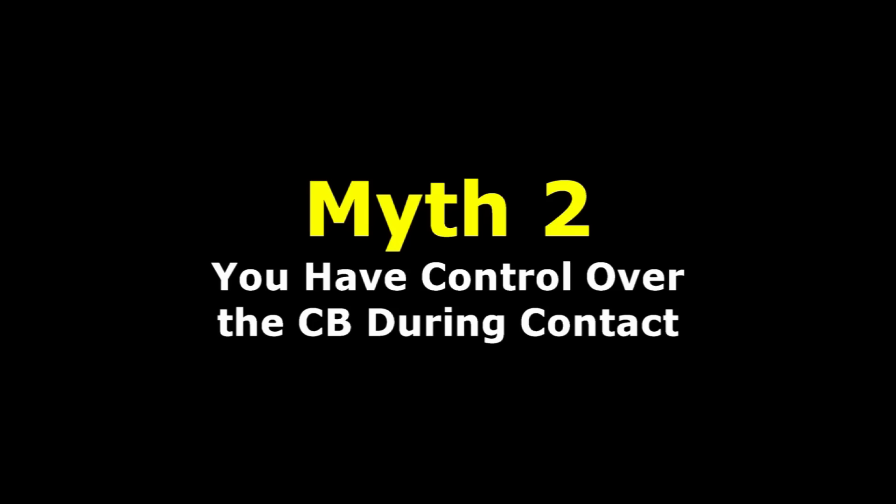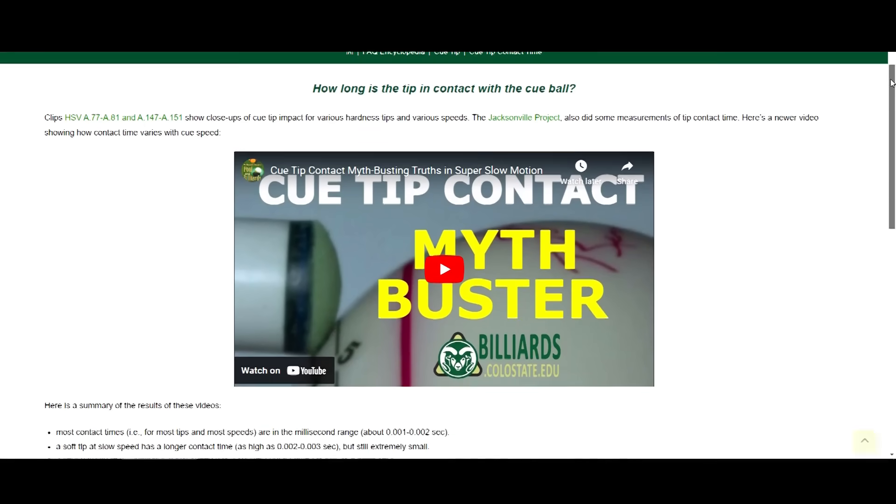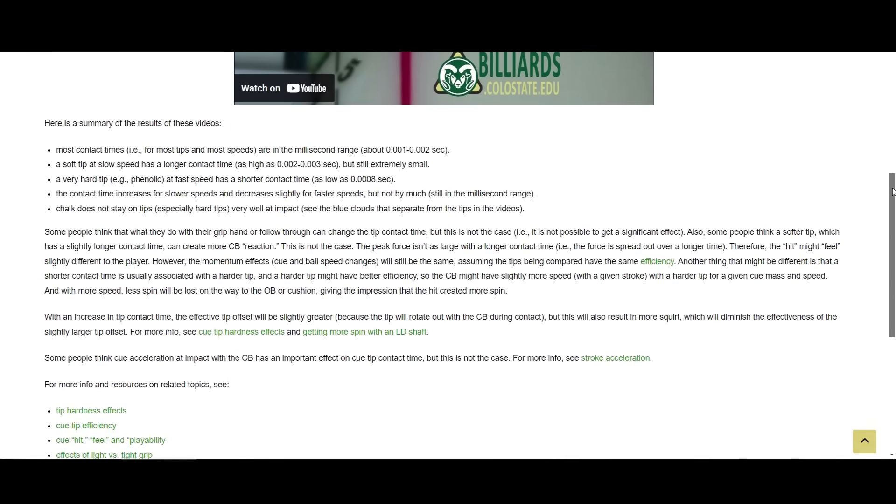Some people think you have control over the cue and cue ball while the tip is in contact with the ball. This is simply false. What you do during the stroke into the ball does have an effect, but at contact, the cue does all the work. The incredibly brief tip contact time is much too short for the grip hand to have any important effect. What you feel during a hit is the cue slowing down a lot as a result of the hit and the force required to speed up the cue again after the cue ball is long gone.